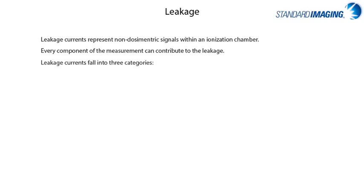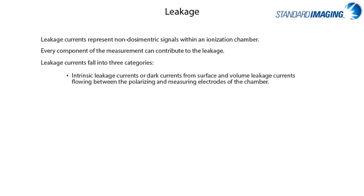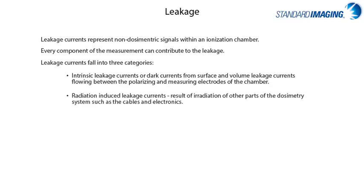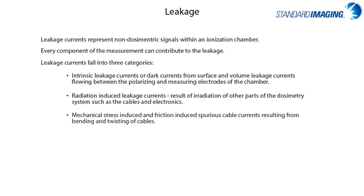Leakage currents fall into three categories. First, intrinsic leakage currents or dark currents, resulting from surface and volume leakage currents flowing between the polarizing and measuring electrodes of the chamber. Second, radiation-induced leakage currents, which occur due to irradiation of other parts of the dosimetry system such as cables and electronics. Third, leakage caused by mechanical stress-induced and friction-induced spurious cable currents resulting from bending and twisting of cables.